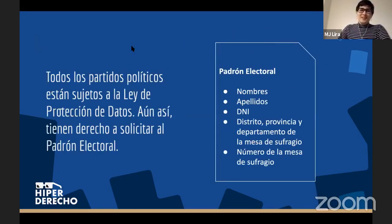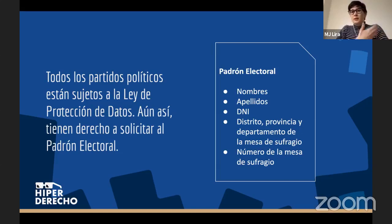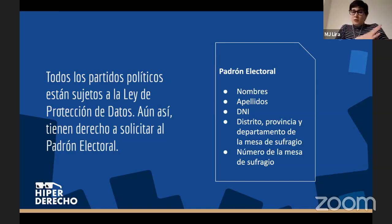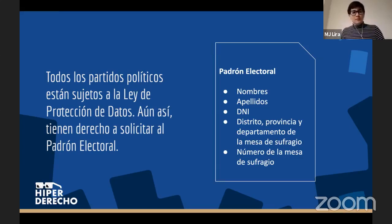Por ejemplo, todos los partidos políticos actualmente, si bien están sujetos a la Ley de Protección de Datos, son entidades privadas y tienen derecho a solicitar el padrón electoral del Jurado Nacional de Elecciones. El JNE emite el padrón electoral, que es la lista de todas las personas hábiles para votar. Aunque en esa lista solo salen nuestros nombres, apellidos, DNI, distritos, provincias y número de mesa de sufragio, igual es bastante información. La idea principal es verificar que no hayan nombres repetidos o personas fallecidas, pero en verdad estas listas pueden ser cruzadas con otras listas.